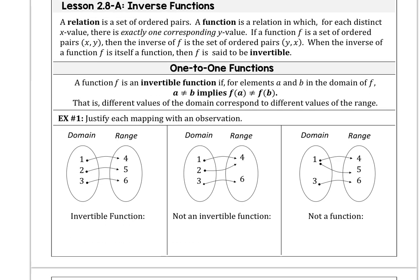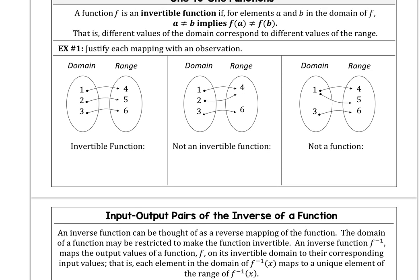Let's start looking at the mappings in example one. We want to justify each mapping with an observation. In the first mapping, one maps to four, two maps to five, and three maps to six. In AP PreCalc we use the language where we say each input in the domain has only one unique output. In the second one it's not an invertible function, and we say that the output values do not map to a unique input value.